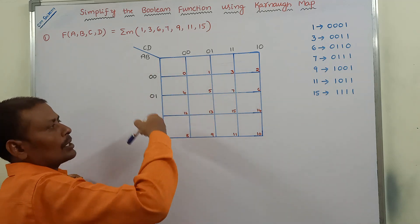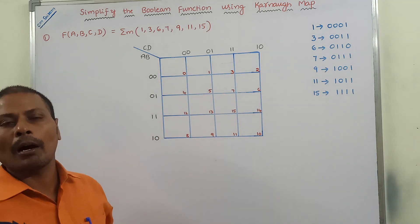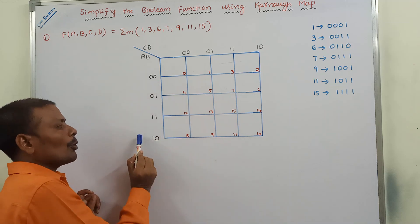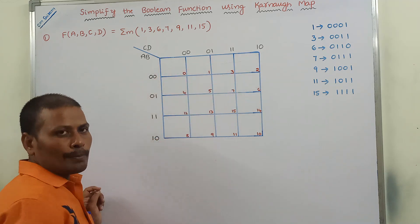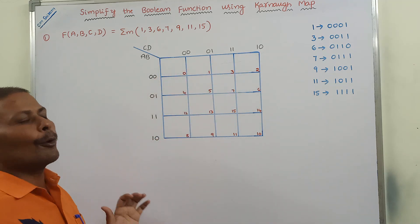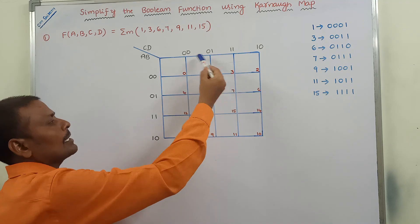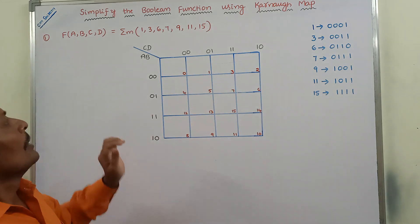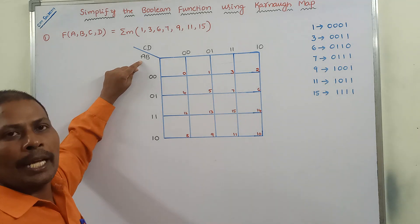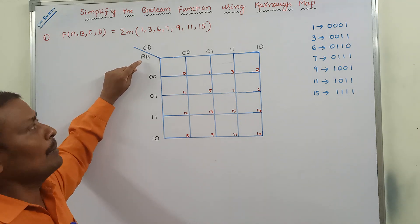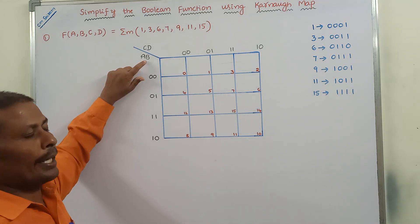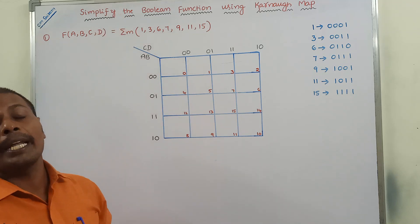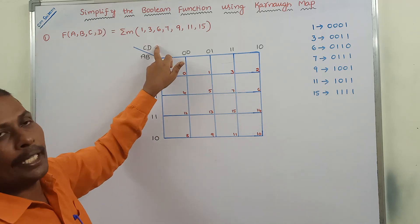This is the structure of the four-variable Karnaugh map. It contains four rows and four columns, so four times four — there are 16 cells available. On the row side I am taking the first two variables, a and b. On the column side I am taking the remaining two variables, c and d.